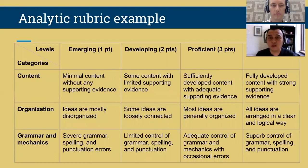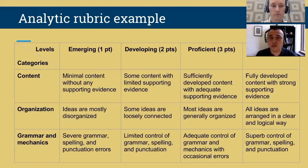With an analytic rubric, you separate this information by providing a different scale for different categories of the assignment. In the same example of a writing composition, you can separately grade content, organization, and grammar and mechanics, each of which has its own scale.